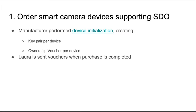First, Laura orders smart cameras that support SDO. A manufacturer can initialize the camera while it is being built, generating a public-private key pair and an ownership voucher. When Laura's purchase is complete, she is sent those vouchers that uniquely identify each camera. These vouchers will be used to authenticate and authorize each camera at a later point when the ownership is transferred.